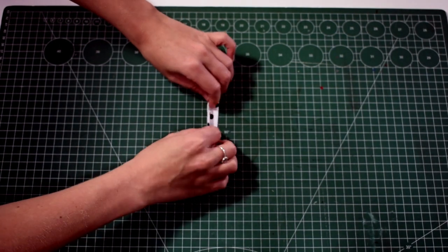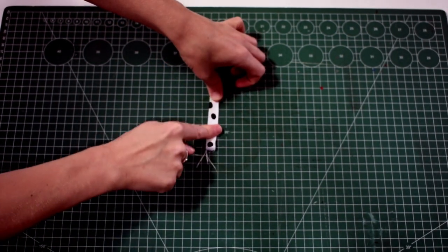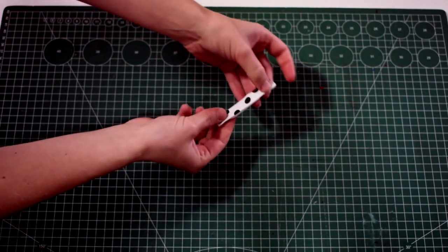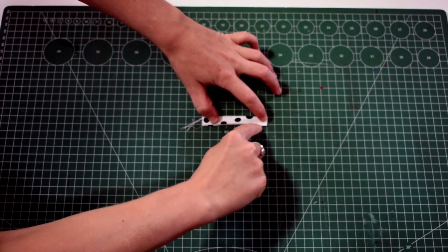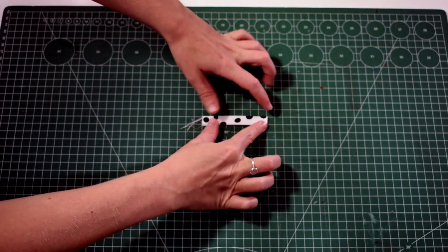We're going to fold this in half and press. This is easier done with an iron so it stays in place. Now we're going to sew straight down the end and repeat the other side.